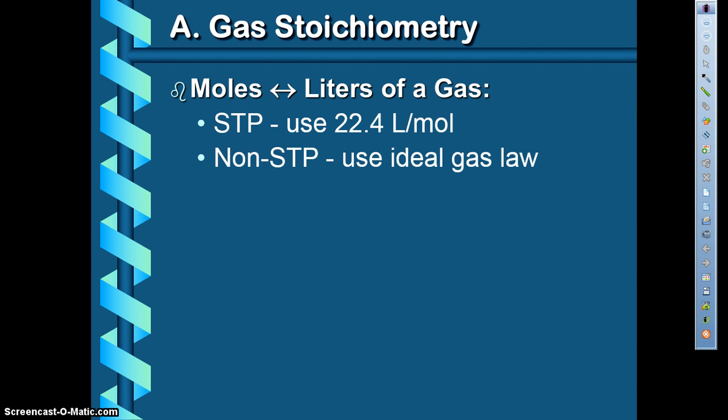So a couple things you need to know is that at STP, which is standard temperature and pressure, the number of moles per liter of any ideal gas is 22.4. So one mole of gas at STP is going to take up 22.4 liters of volume. Non-STP, we're going to use ideal gas law to calculate it first.